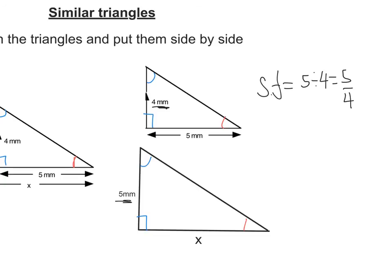We need to find out what x is. x is the longest side, so we're going to take the corresponding distance, 5 millimeters, and times that by 5 over 4. If you put that into your calculator, you will get 25 over 4, which is the same as 6.25 millimeters.